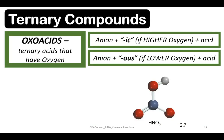Oxy acids, on the other hand, contain hydrogen, oxygen, and one other element. The name of the acid is based on the anion attached to the hydrogen. The suffix we use depends on whether the oxygen content is higher or lower.